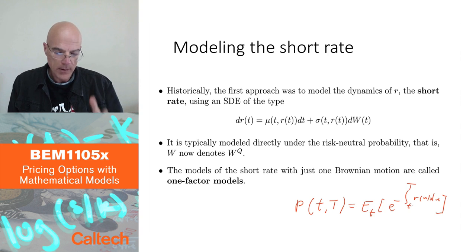Or if you only have bonds in your model, it would correspond to rolling over continuously, very short maturity, infinitesimal maturity bonds.